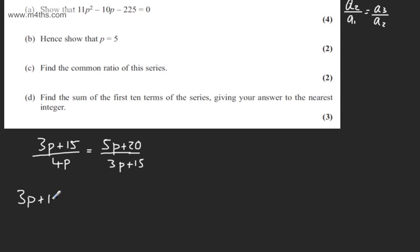So on the left hand side we'll have 3p plus 15 all squared, or 3p plus 15 multiplied by 3p plus 15. On the right hand side, 4p multiplied by the quantity 5p plus 20.